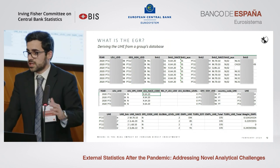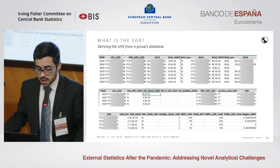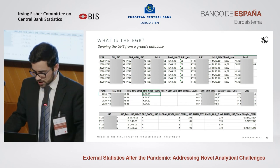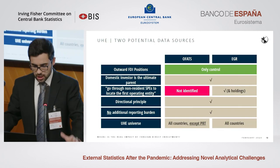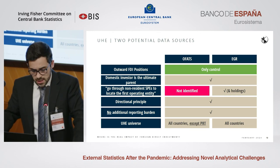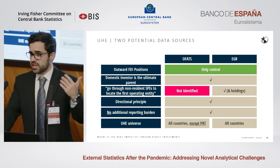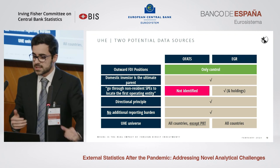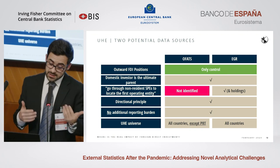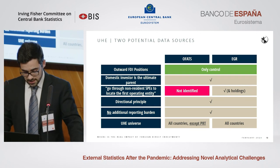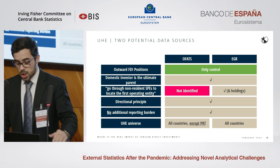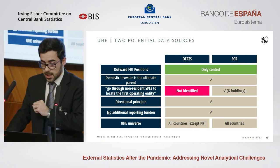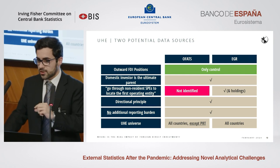This picture of our database illustrates what we did: departing from the EGR, we built a groups database that we then cross with our internal FDI database at the granular level. Comparing the two data sources, two main aspects stand out. With the EGR, we can identify non-resident SPEs and have access to the group structure, enabling us to look through non-resident SPEs and holding companies until we find the ultimate host entity. The other important difference is that when using the EGR we can define the ultimate host economy as the compiling economy — so Portugal can be the ultimate host — which is not possible when using OFATS, since there we only have foreign controlled affiliates.